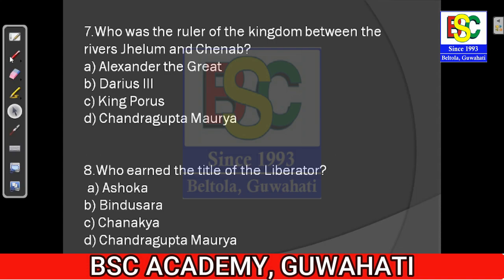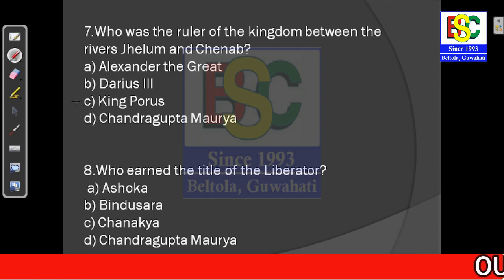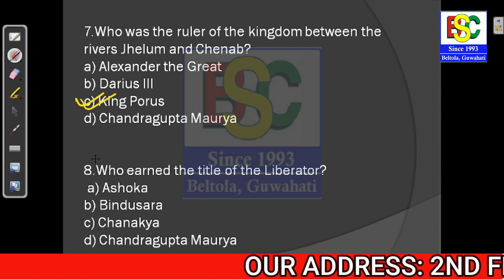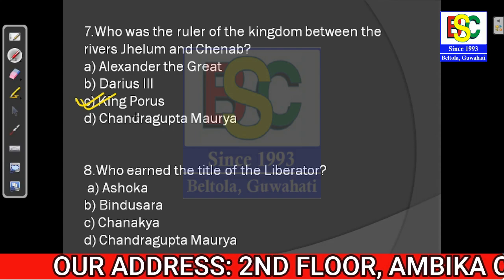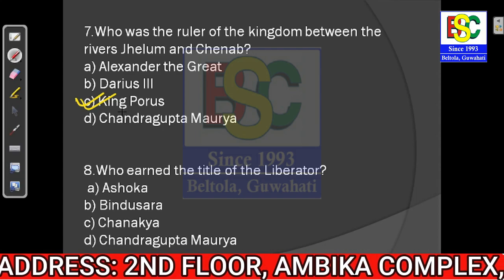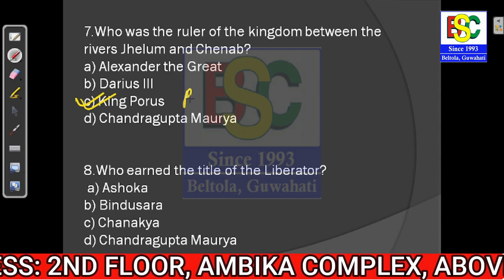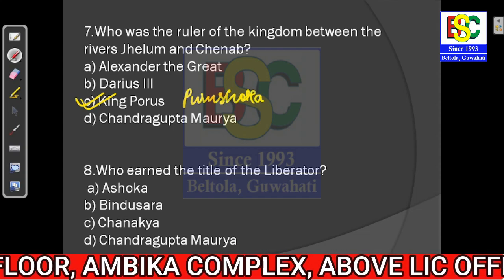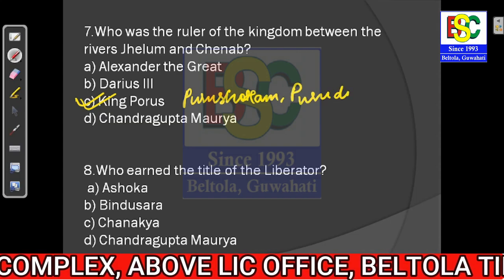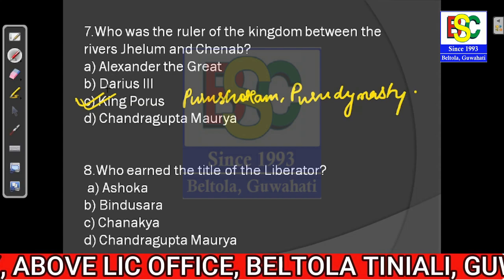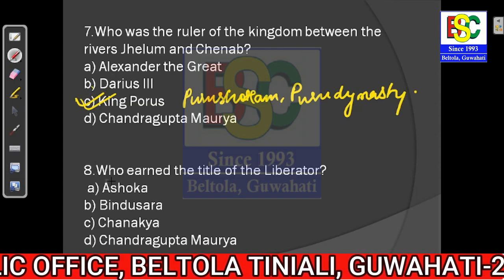Question number seven: Who was the ruler of the kingdom between the rivers Jhelum and Chena? The answer is option C — King Porus. He was the leader of the kingdom between those two rivers. If you have heard the name King Porus, his actual name was Purushottam and he was from the Puru dynasty.